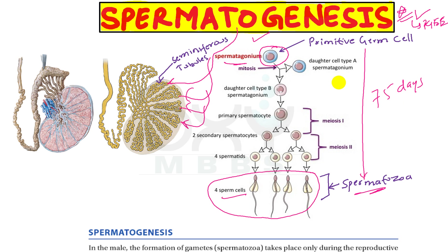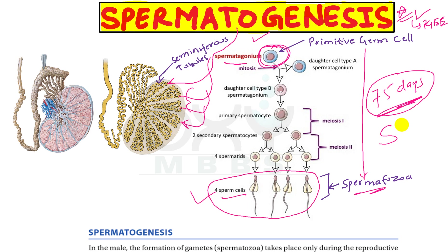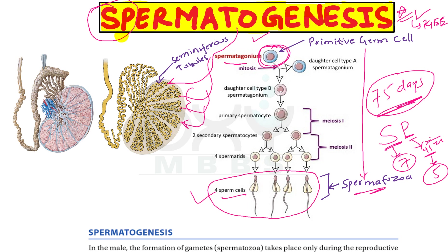To remember that spermatogenesis takes 75 days, use this trick: write 'S' and 'P' from the word spermatogenesis. 'S' stands for seven and 'P' stands for five (patch = five), so the starting alphabets of spermatogenesis itself indicate 75 days.